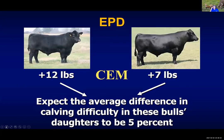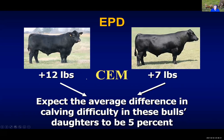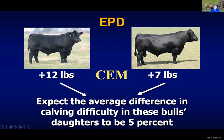We also have, in most breeds, a calving ease maternal EPD, and those work a little differently, so we need to be aware of how they work. The results show up an actual generation further down. If we were to breed these two bulls to equal females and keep back their replacement daughters, this bull's replacement daughters would have reduced calving difficulty by about 5% compared to the daughters produced by the other bull. I really encourage producers who are going to be keeping back replacement females to pay more attention to this EPD.